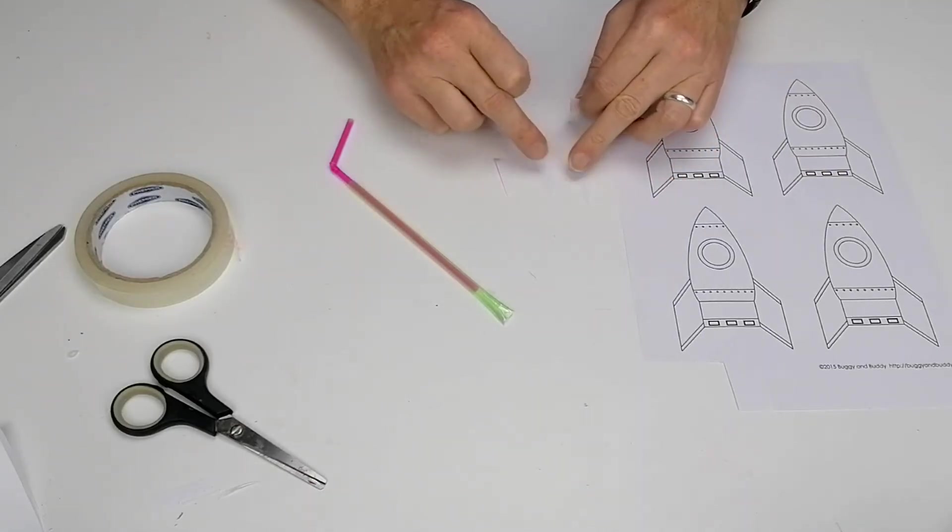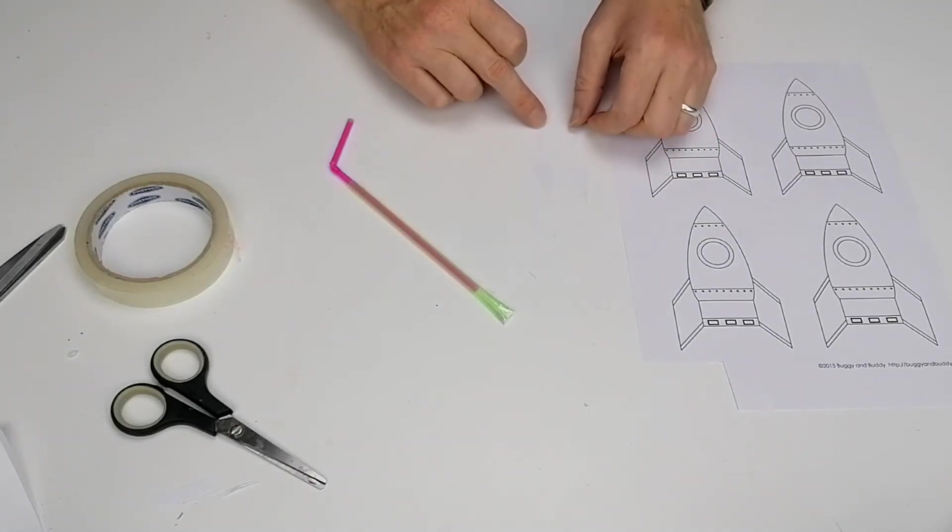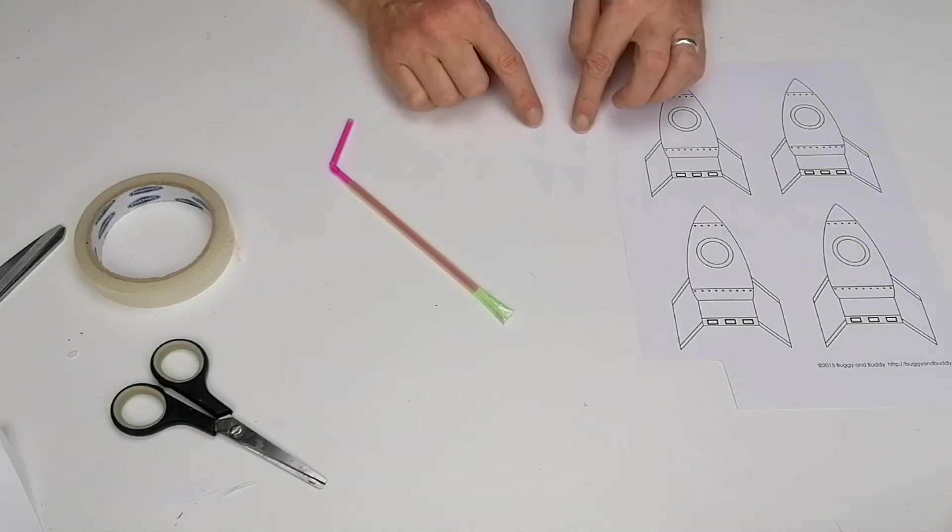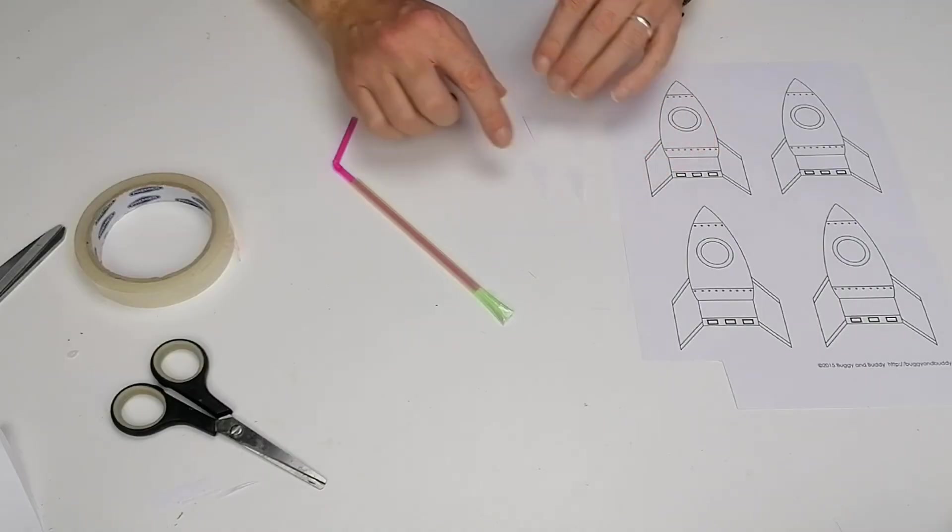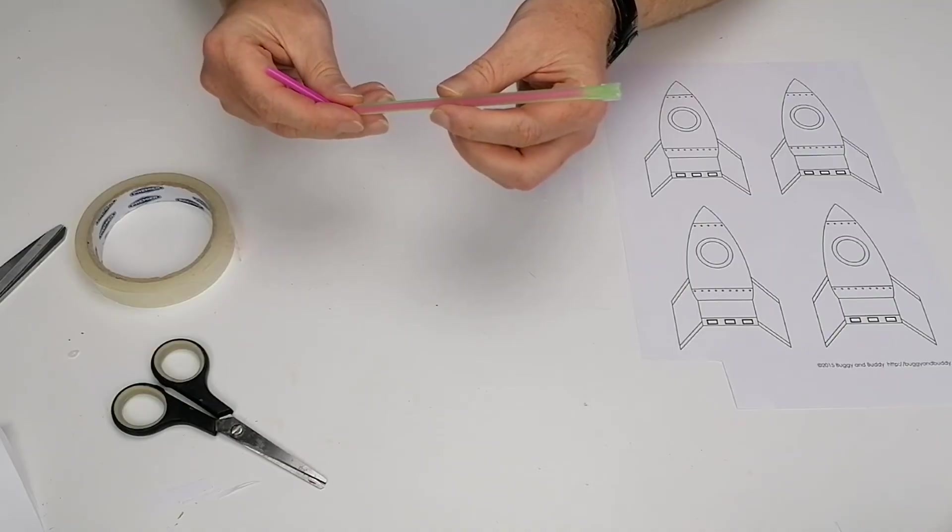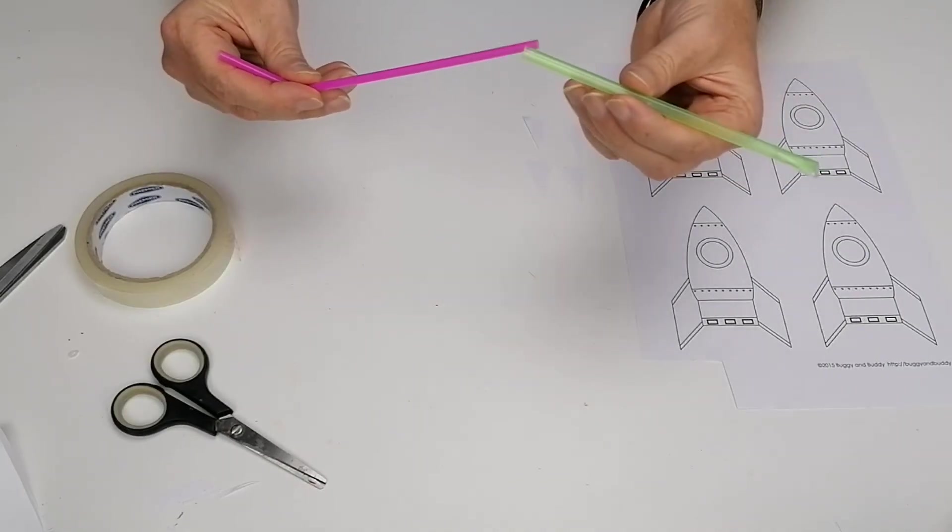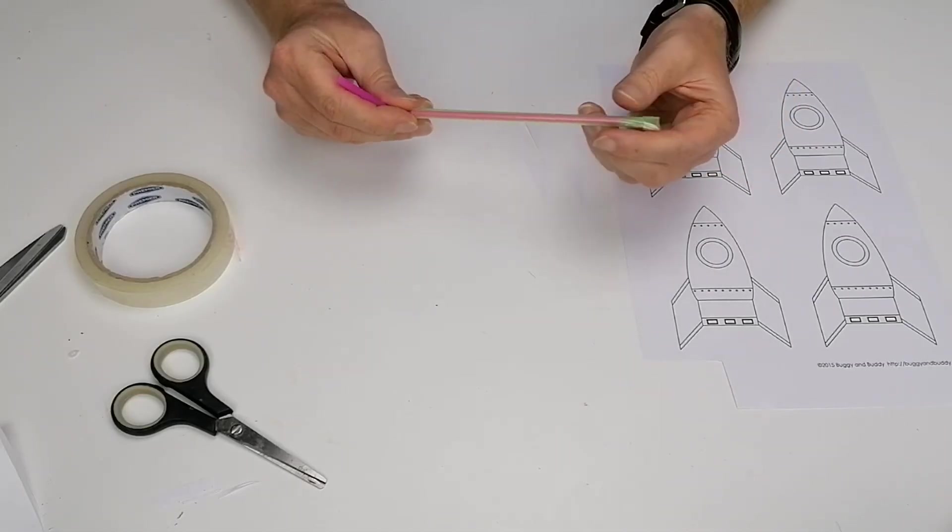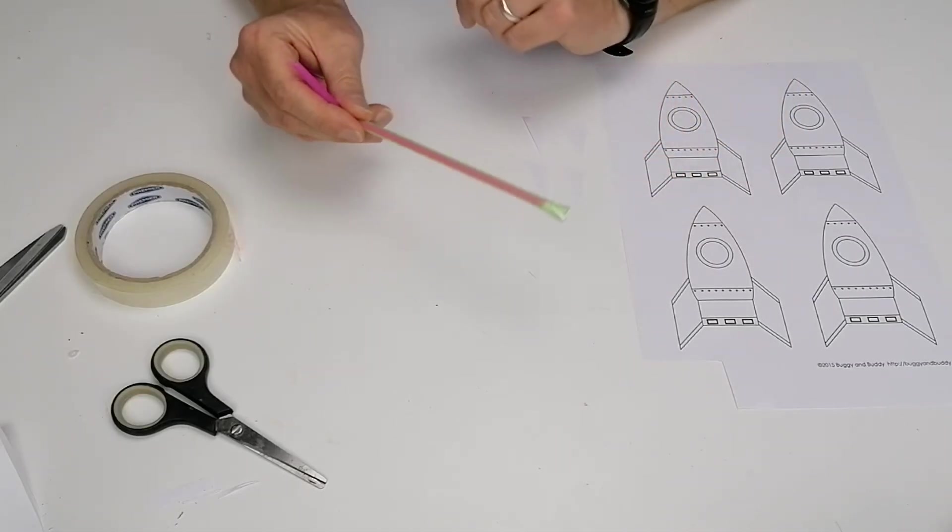But what we're going to try first is, I've made two more here. I wouldn't go beyond four fins really, it's a little bit too much. But I'm going to try two fins to start with and see how the distance changes as you fire it without any fins, and then maybe with two fins, and then with four fins. How does adding fins change the rocket?